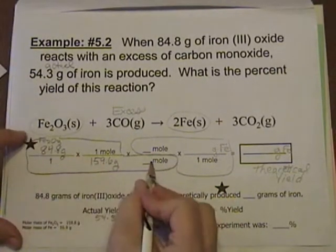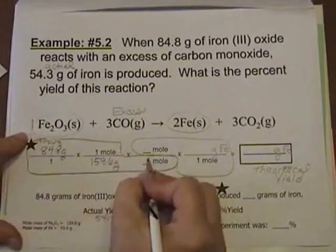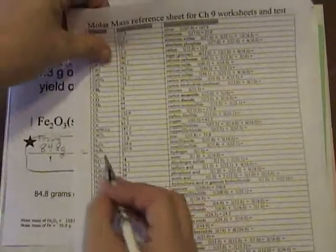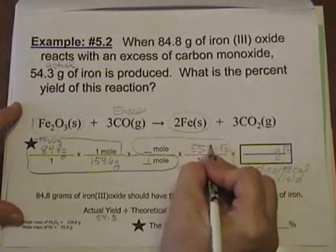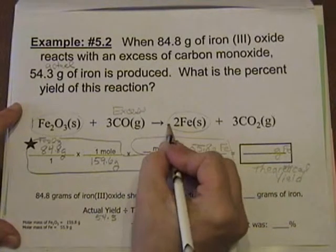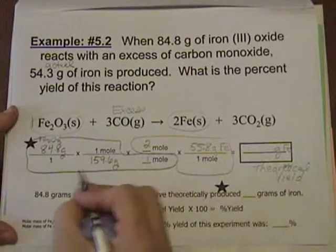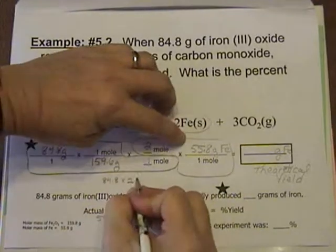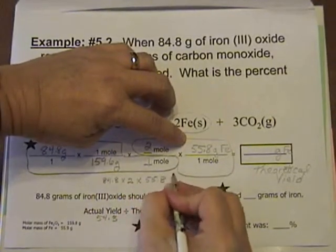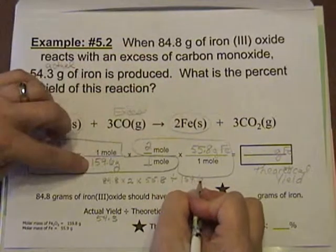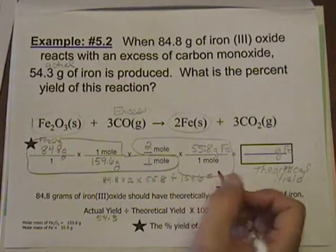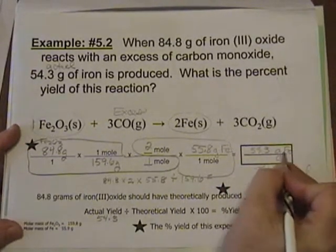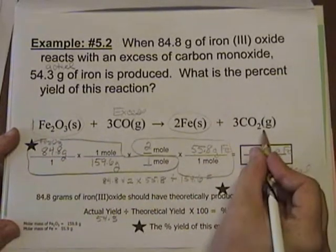Now I'm going to need the coefficient of Fe2O3, which is 1. Now I'm going to need the molar mass of Fe, 55.8, and the coefficient of Fe. When I punch it into the calculator, it's going to be 84.8 times 2 times 55.8 divided by 159.6 equals. That number came out to be 59.3 grams of Fe. That's what should have been made with this reaction if we lived in a perfect world.